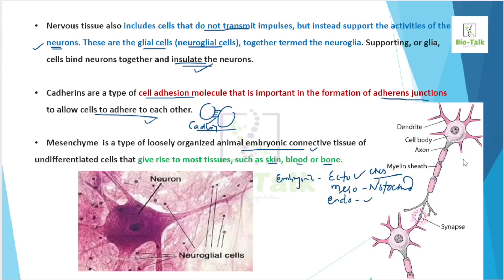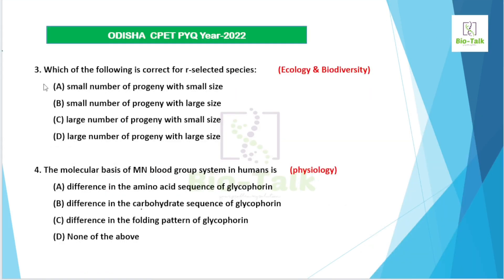The neuron is the unit that transmits impulses — the glial cell does not transmit impulses but supports the neuron. That is the answer to the supporting-cell question. Now moving to the next question: which of the following is correct regarding r-selected and K-selected species?